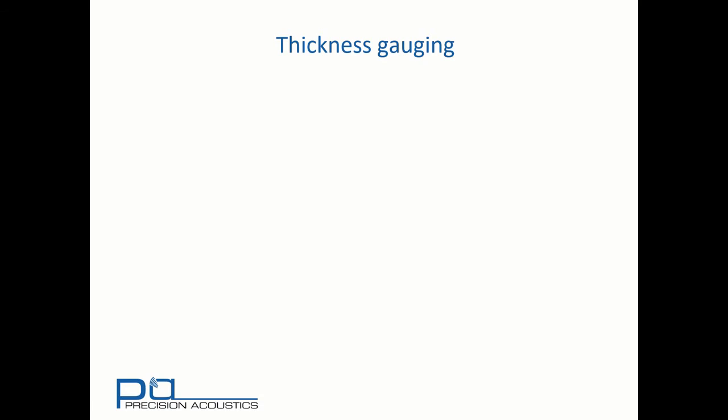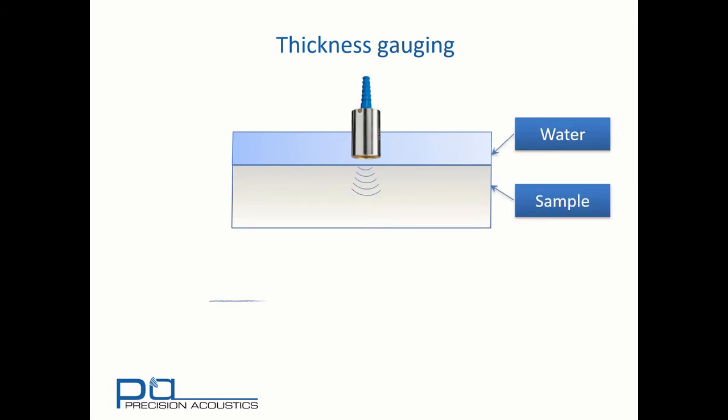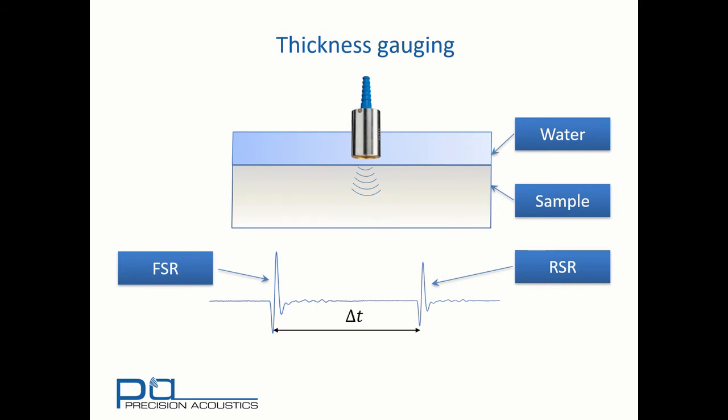We can also use these images to start to make measurements. Consider a simple case of a sample with water above it, and a transducer emitting through the water into the sample. We get two reflected pulses, one of which is the front surface reflection, the second is the rear surface reflection. We can determine a time delay between these two reflections. And provided we know the wave speed, c, then we can relate a change in distance, delta x, to the delta time.